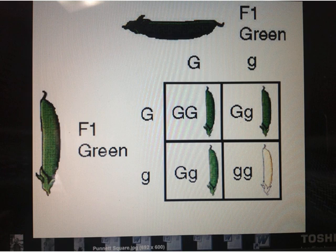It is a chance for the plant offspring, for example, to inherit a green pod or a yellow pod from the parent plants.